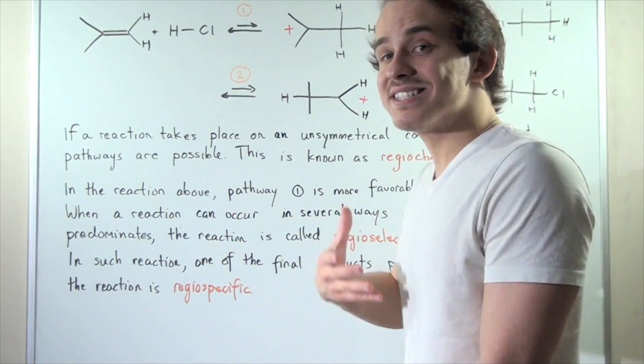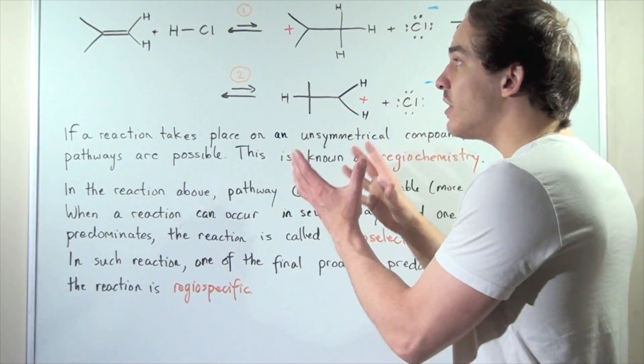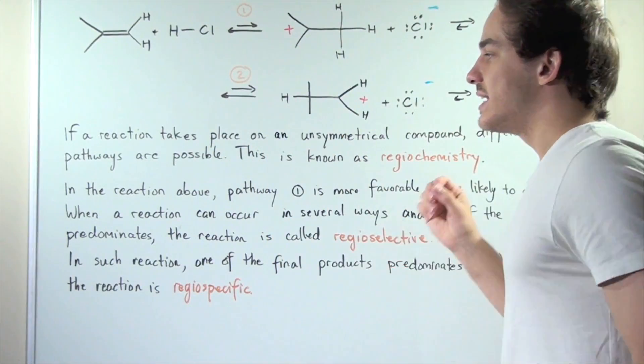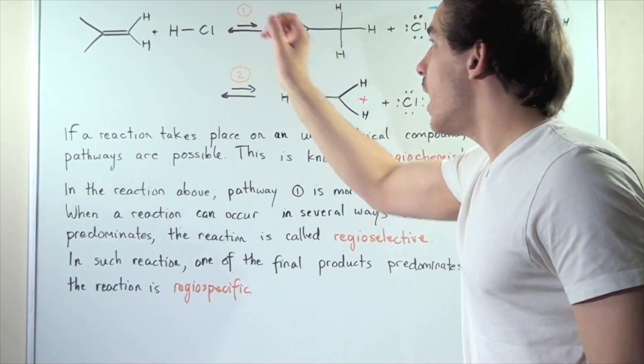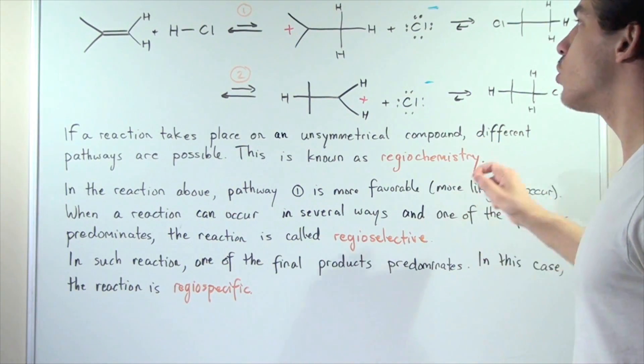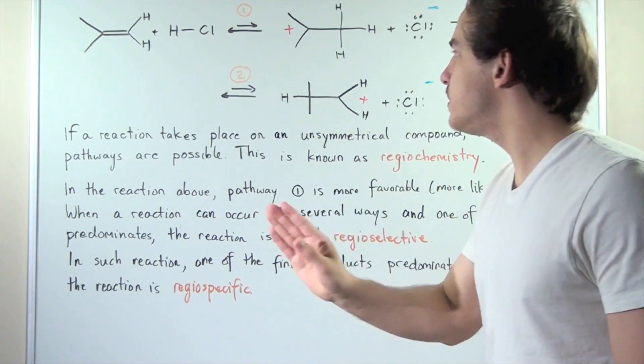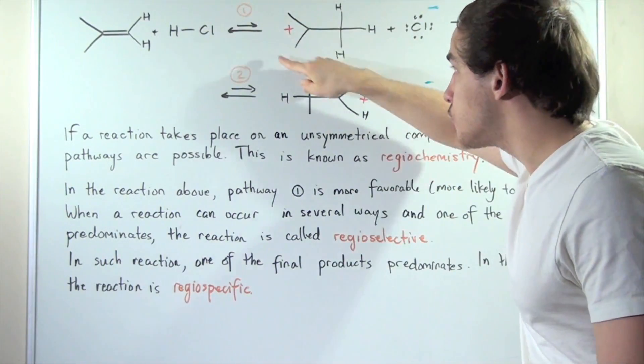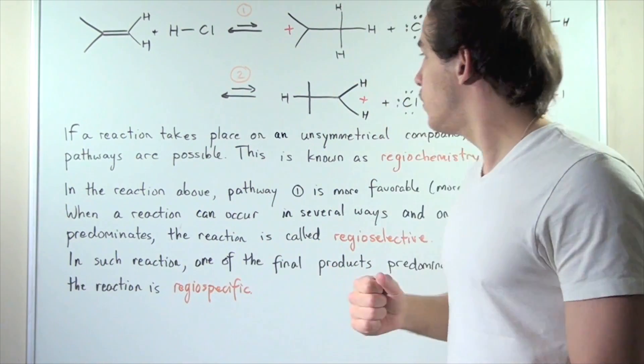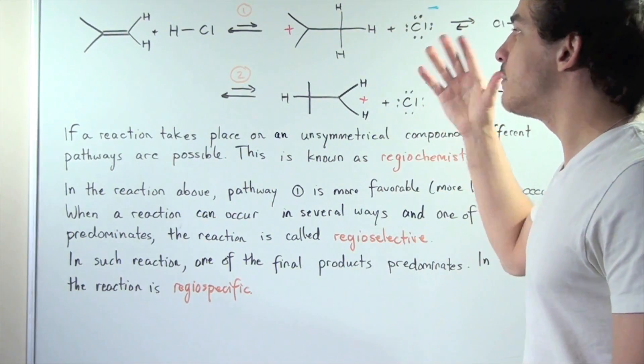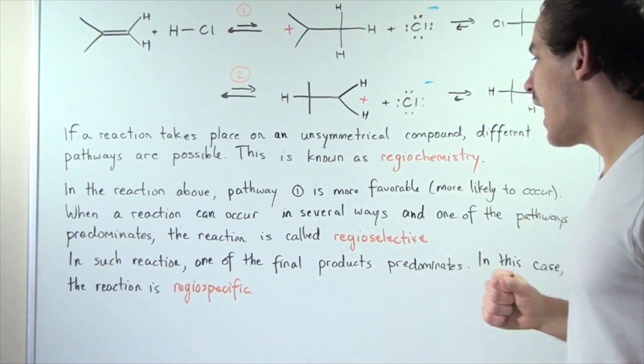Regiochemistry is basically the study of the different pathways that our two reactants can take. In the reaction above, pathway one is more favorable - it's more likely to occur. That's because this intermediate carbocation, this tertiary carbocation, is more stable than this primary carbocation. We'll examine that in a future lecture.